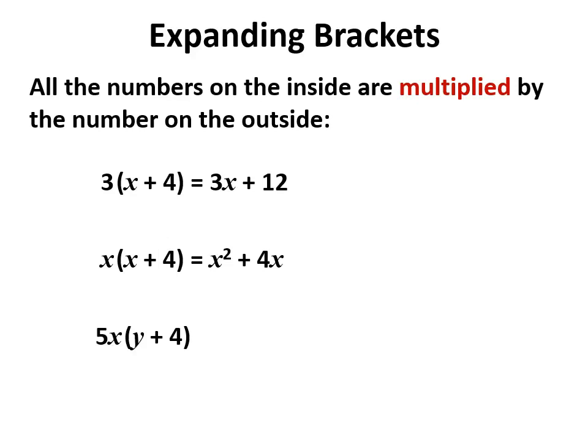If there are multiple things on the outside, like the 5 and x here, then both multiply in. So 5x times y is 5xy, and 5x times 4 is 20x. That's basically the whole story.